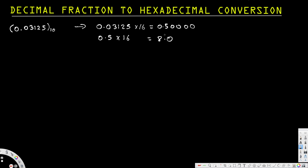We go from top to bottom, and these two numbers come after the point. So 0.08 is going to be the conversion. We can write: 0.03125 base 10 is equal to 0.08 base 16.